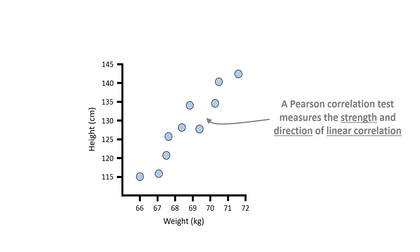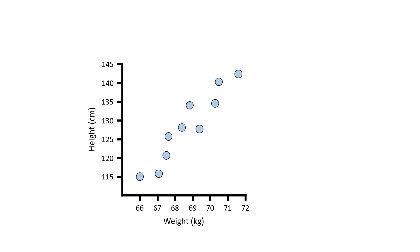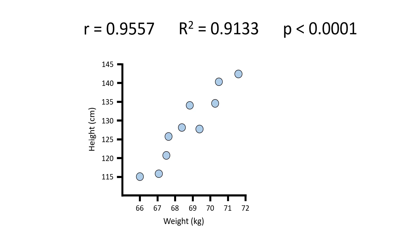So suppose I have performed a Pearson correlation test using my example data. I get three outputs in return: what is known as an r-value, an r-squared value, and a p-value. Let's put the r-squared and the p-value aside for a moment and concentrate on this r-value. So what is r?